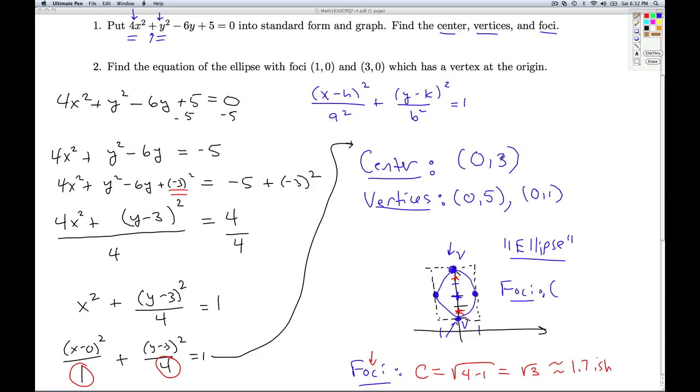We start at (0, 3) and move up radical 3. That's going to get us to (0, 3 + √3). If I start at (0, 3) and move down radical 3, that's (0, 3 - √3). So that'll do it for number 1.